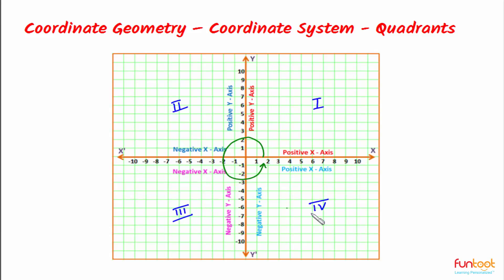Points in the first quadrant have their X coordinate as well as Y coordinate as positive.